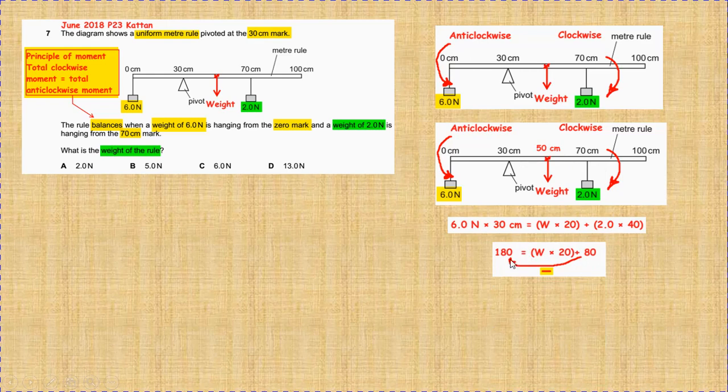Okay, for the second part, 6 times 30, which is 180, equals W times 20 plus 2 times 40, which is 80.